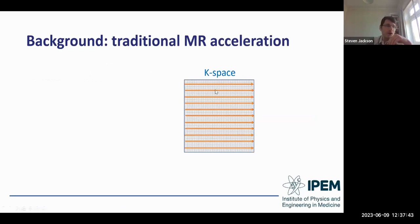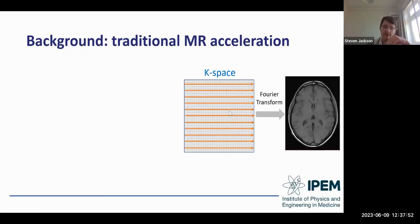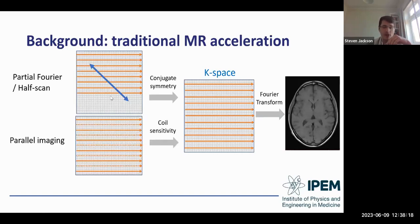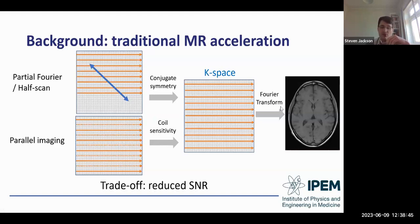MR images are acquired line by line in K-space, and that information is then Fourier transformed into the final image. Partial Fourier or half scan acquires a subset of K-space — for example five-eighths, six-eighths, or seven-eighths — and uses mathematical symmetry properties of K-space to fill in the rest before reconstruction. With parallel imaging, you skip a certain number of lines of K-space, for example every other line, then use information about receive coil element sensitivities to fill in the rest of K-space and reconstruct the image. Both methods allow faster acquisition but the trade-off is reduced signal-to-noise ratio.